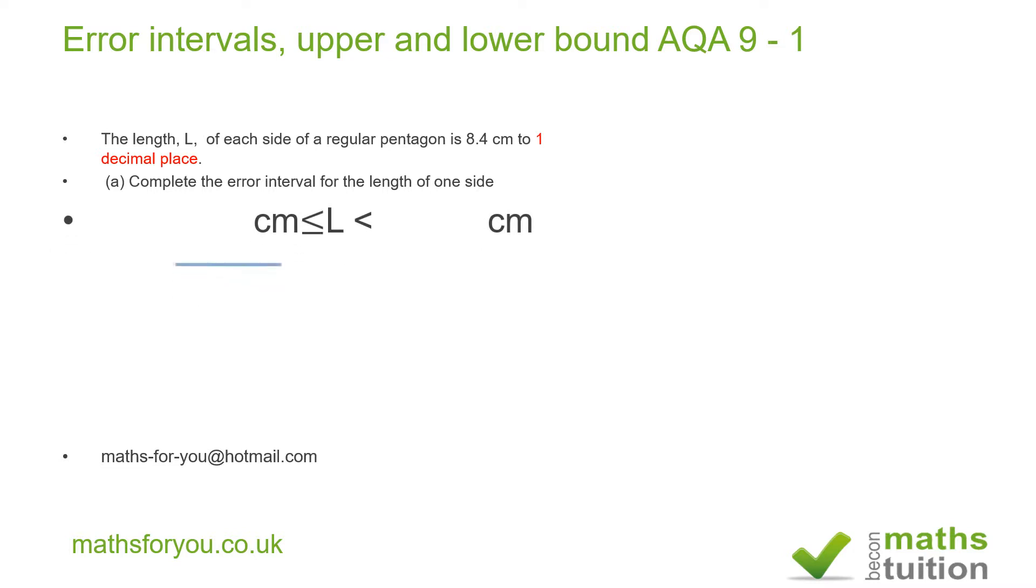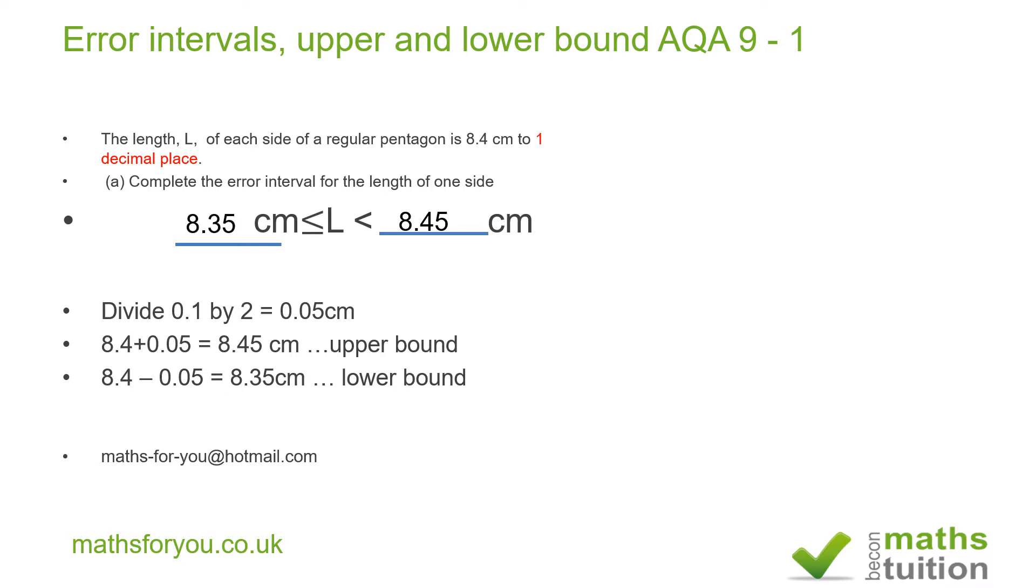Anyway, this is it here. So to get upper bound, I divide 0.1 by 2, which gives me 0.05, and then I add 0.05 to 8.4 to give me the upper bound of 8.45. Now, for the lower bound, I subtract 0.05 from 8.4 and that gives me 8.35 cm, and that's my lower bound.